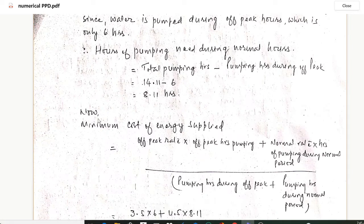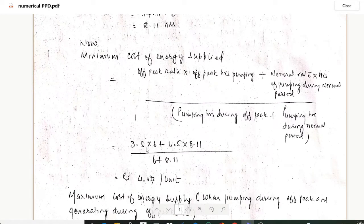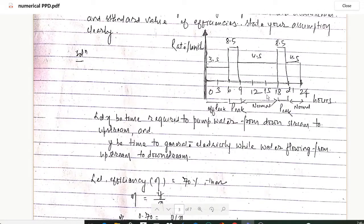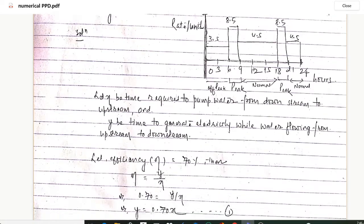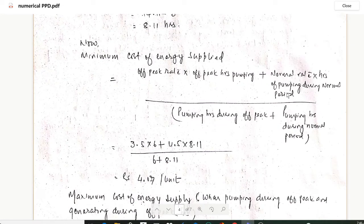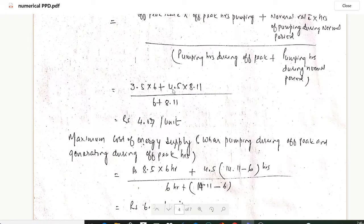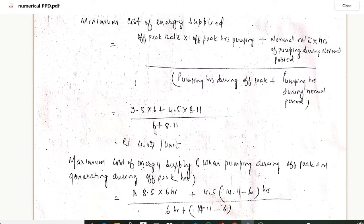For minimum cost of energy supplied, we use: (off-peak rate × off-peak pumping hours + normal rate × normal pumping hours) divided by (total pumping hours). That is: (3.5 × 6 + 4.5 × 8.11) divided by (6 + 8.11), which gives Rs 4.07 per unit. This is our minimum cost of energy supplied.